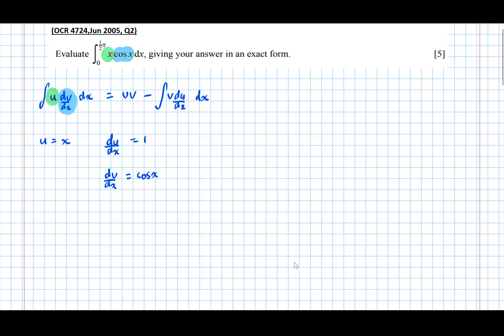Also, they might not appear in order. It could have very well been the case that here our u was cos x and our dv by dx was x. It's not, but that can happen.